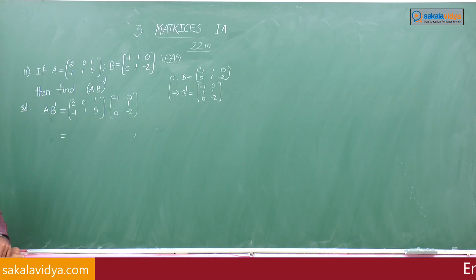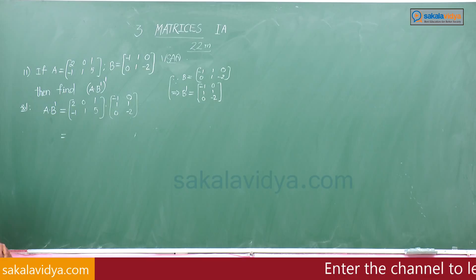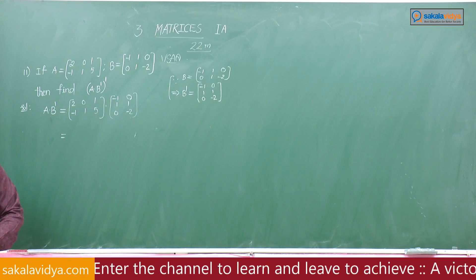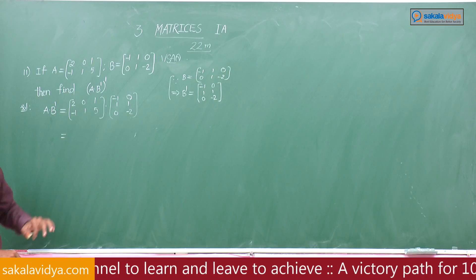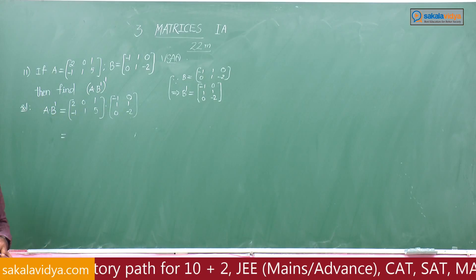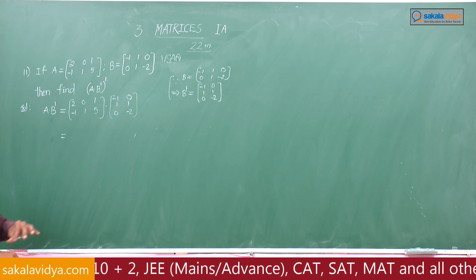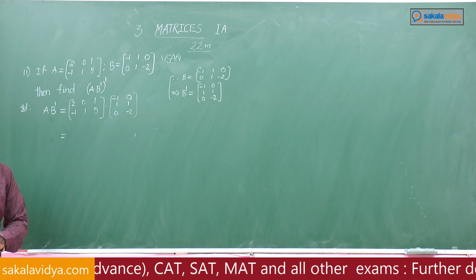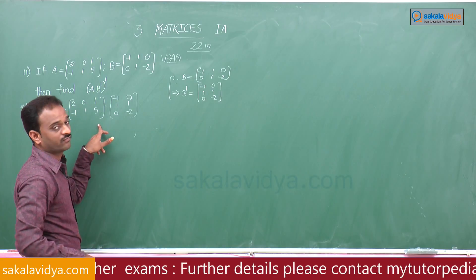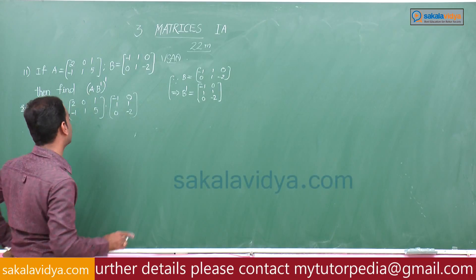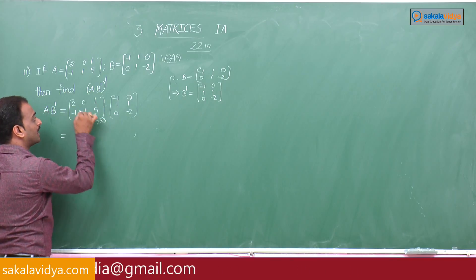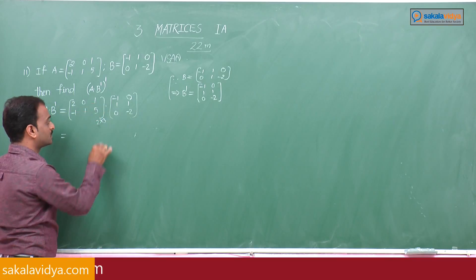To find the product between any two matrices, the condition is: the number of columns in the first matrix must equal the number of rows in the second matrix. Matrix A has order 2×3, so 2 rows and 3 columns.